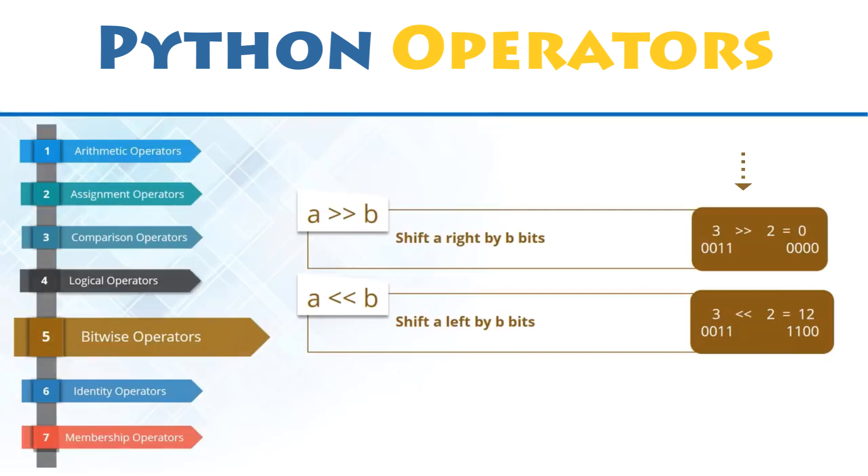Then, you will have to specify which type of shift you want to perform using two greater than signs or two lesser than signs. Finally, once you have done that, you will have to specify the number of bits you want to shift. Then, the binary output will shift towards the direction you chose, left or right, for the number of bits you specified.